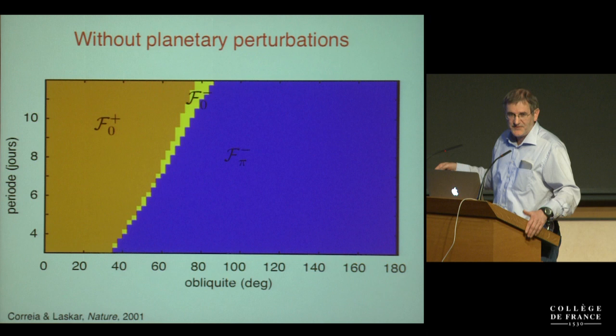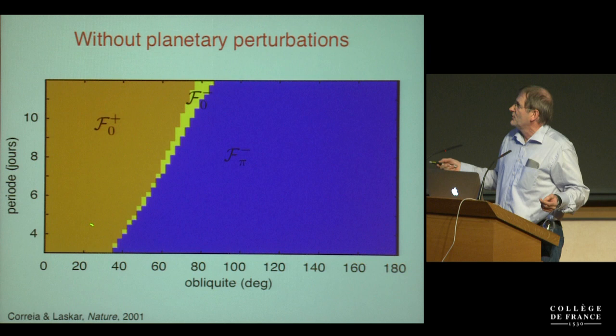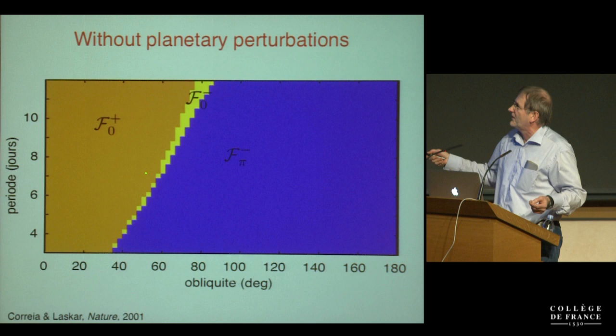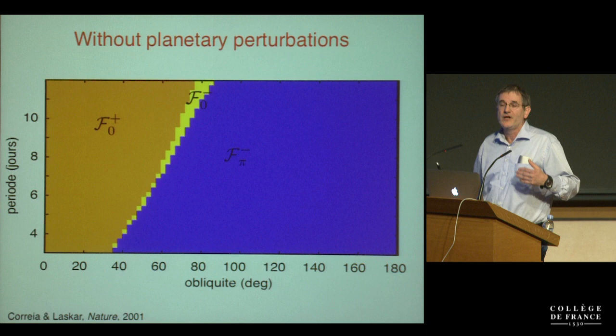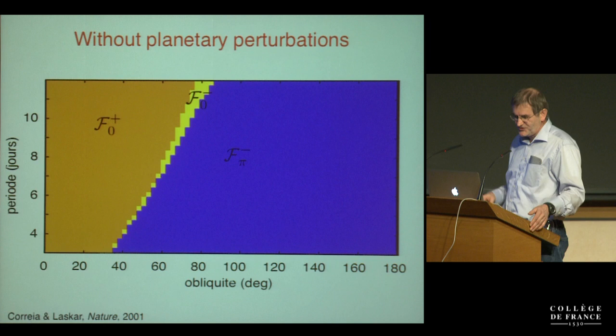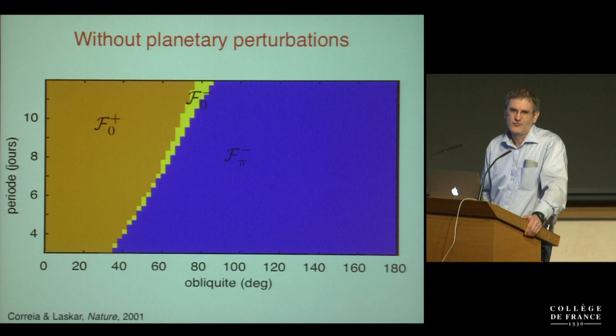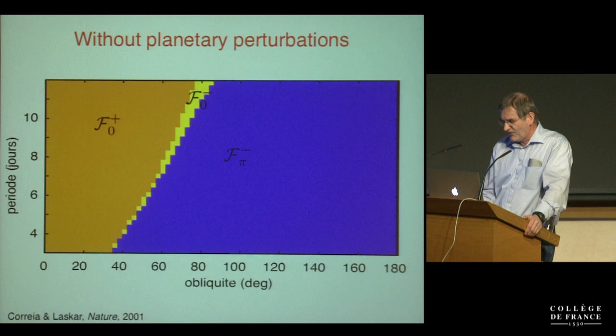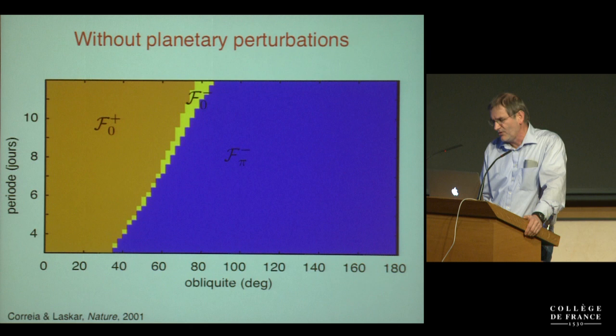But this is not the whole picture. With only this, to get retrograde rotation you would need to start with a large initial obliquity — for example from a giant impact that tilts Venus. That is not a very elegant solution, so we look for more subtle mechanisms, including the influence on obliquity from planetary perturbations. For the Earth, the obliquity changes by about 1.3 degrees due to the other planets moving the plane of Earth's orbit.